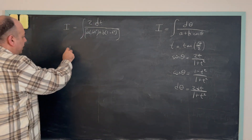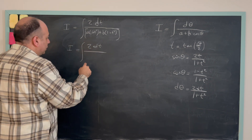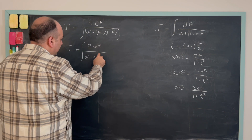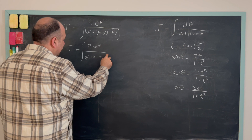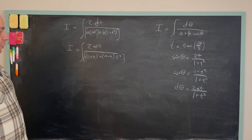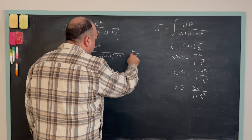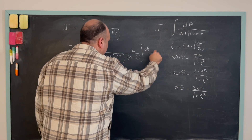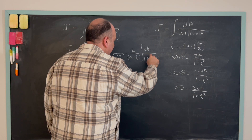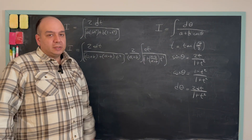The integral simplifies to 2 dt over [(a plus b) plus (a minus b) t squared]. Taking the constants out, this becomes 2 over (a plus b), times the integral of dt over [1 plus (a minus b)/(a plus b) times t squared]. This is the integral I need to evaluate.